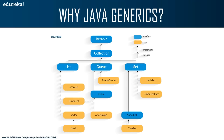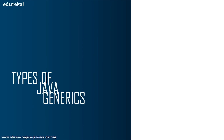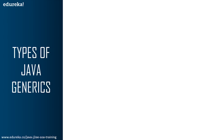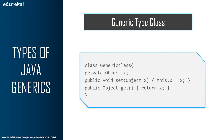Now that you know what generics in Java is and why you need it, let's look at some of the types of generics. There are four types: generic type class, interface, method, and constructor. A class is said to be generic if it declares one or more type variables, which are known as the parameters of the Java class.